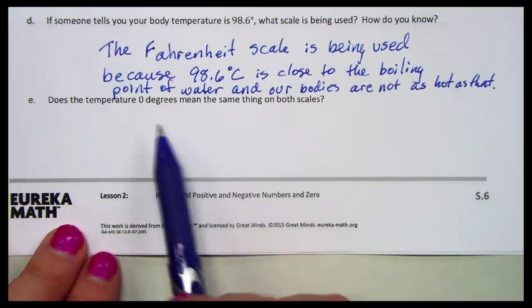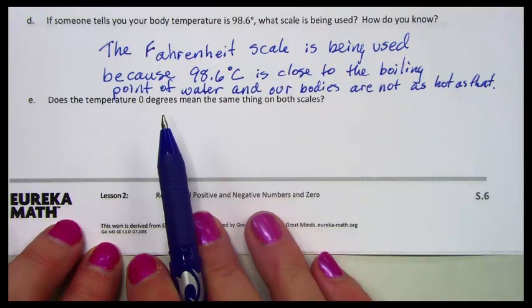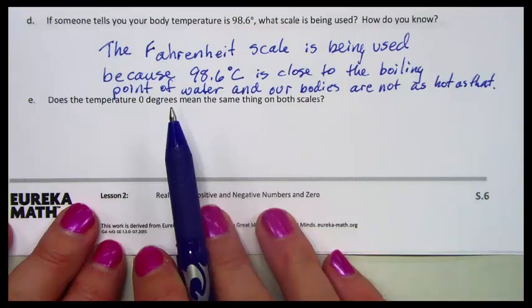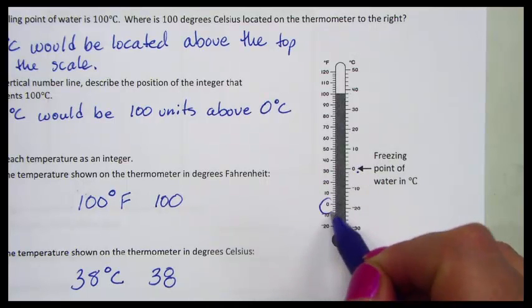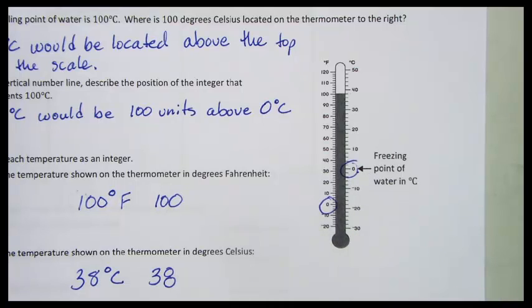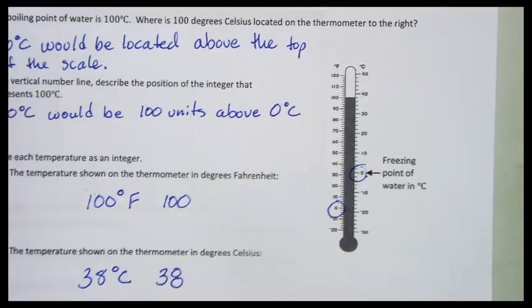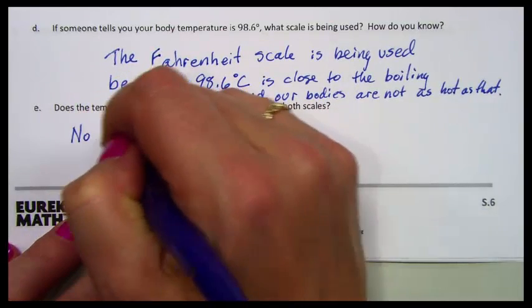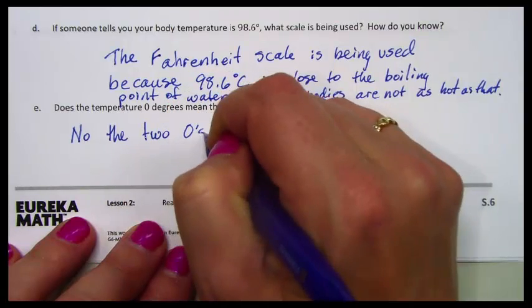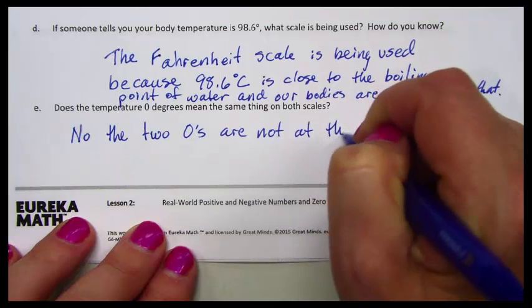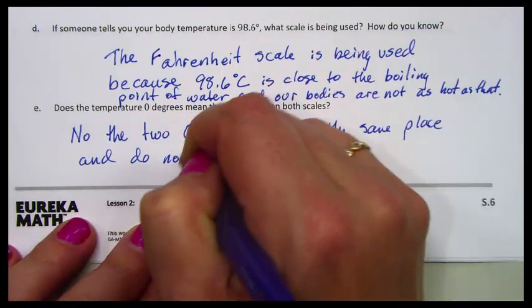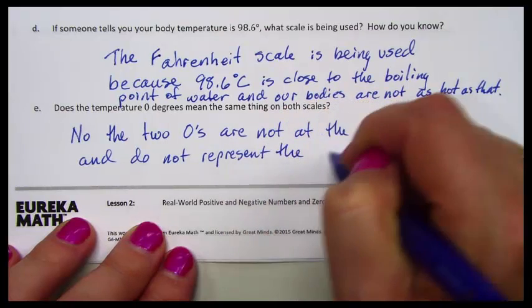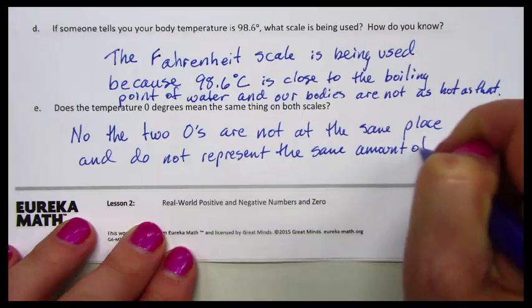And the last question here, does the temperature zero degrees mean the same thing on both scales? Remember, zero here on the scale was the freezing point of water. Here's zero on the Fahrenheit scale. Are they at the same place? Since they're not at the same place, they don't actually represent the same amount of heat. So no, the two zeros are not at the same place and do not represent the same amount of heat.